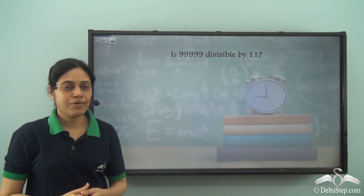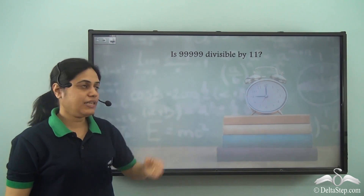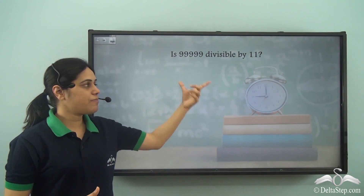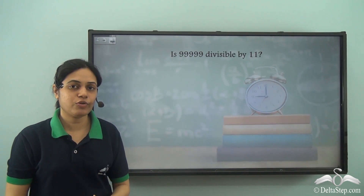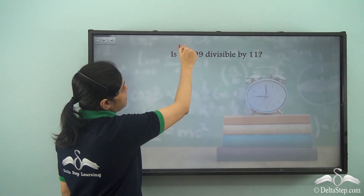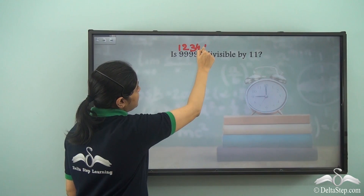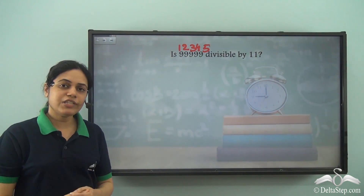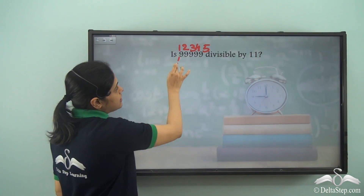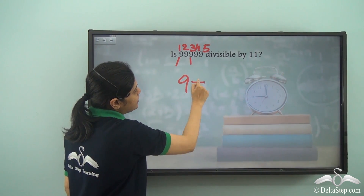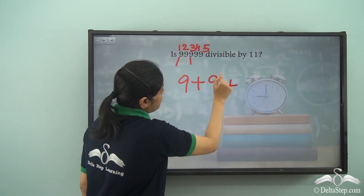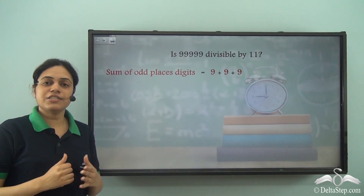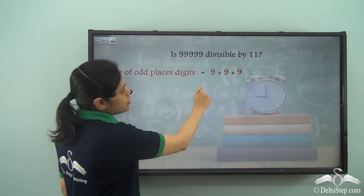Let us try one more. Is 99999 divisible by 11? We have five 9's here. This is the 1st, 2nd, 3rd, 4th, and 5th place — I have 9 in all the places. The sum of the digits in the odd places is the 1st, 3rd, and 5th digits: 9 plus 9 plus 9, which is 27.